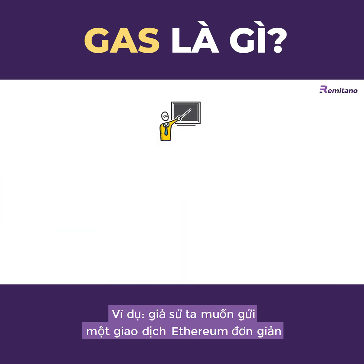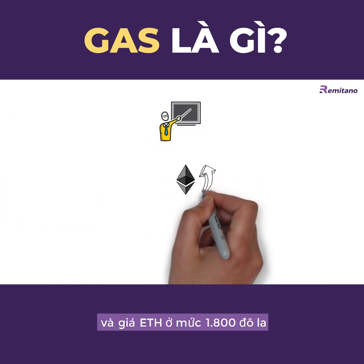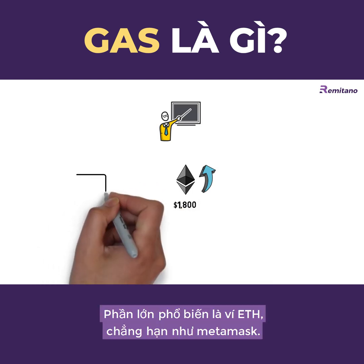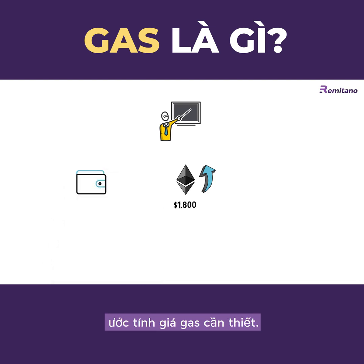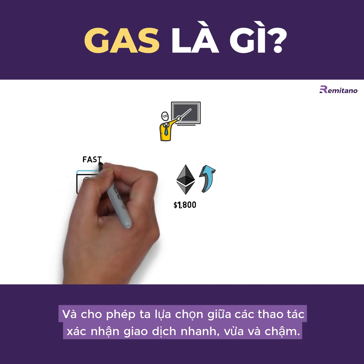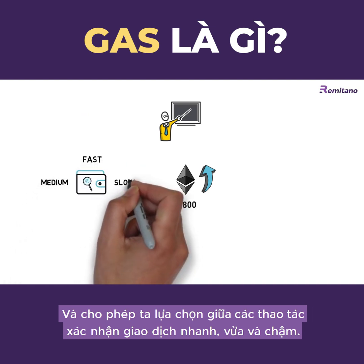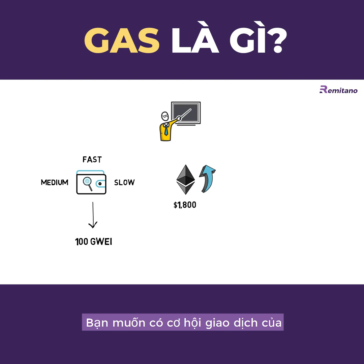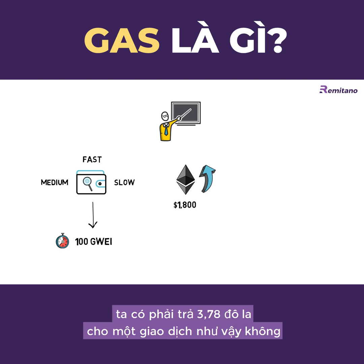As an example, let's say we want to send a simple Ethereum transaction and the ETH price is at $1,800. Most popular Ethereum wallets, such as MetaMask, estimate necessary gas prices and allow us to choose between fast, medium, and slow transaction confirmation speed. Let's assume the wallet estimated the gas price to be 100 Gwei for confirmation within the next minute. We can quickly calculate that we have to pay $3.78 for such a transaction.